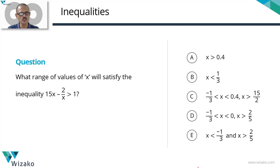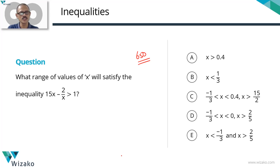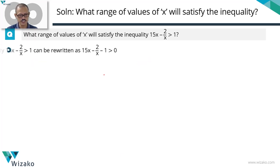This is a medium difficulty GMAT problem-solving question. Classify this one as a 650-level question. It's from the topic Inequalities — a very useful question in terms of understanding the framework to solve questions of this nature. What range of values of x will satisfy the inequality 15x minus 2 upon x is greater than 1? This is the expression given to us.